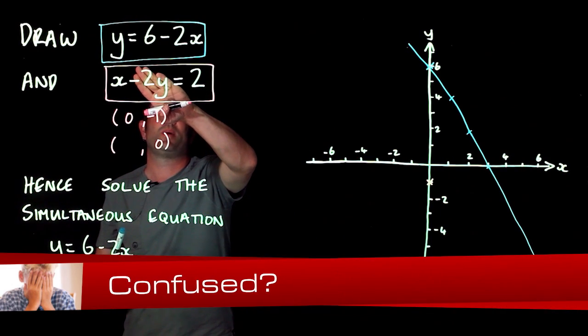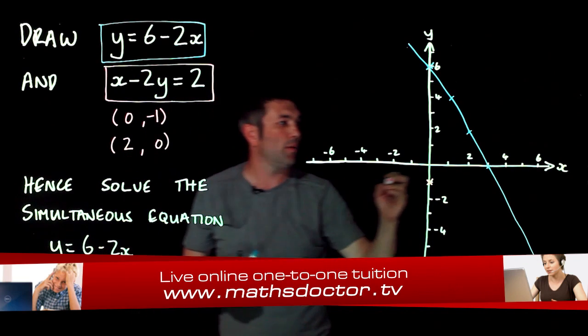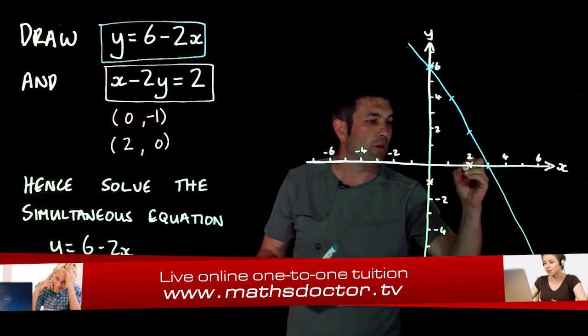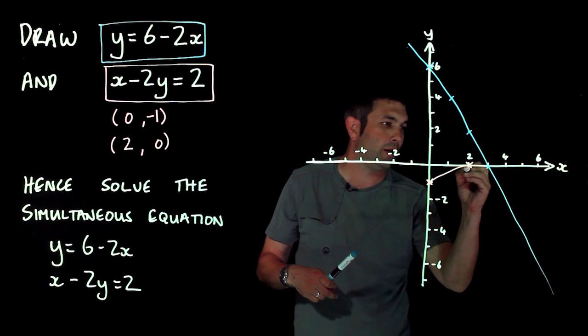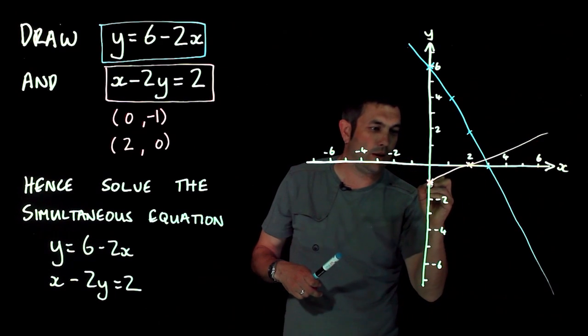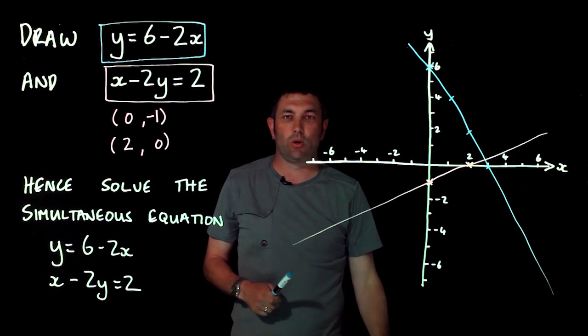And when I cover the y bit up I get what x is, and I get x equals two. So my other point is two zero. And there are my two points. I'm going to draw a line between them, and it's going to go about there and over there somewhere. So there we go, there's my two lines drawn neatly on the graph.